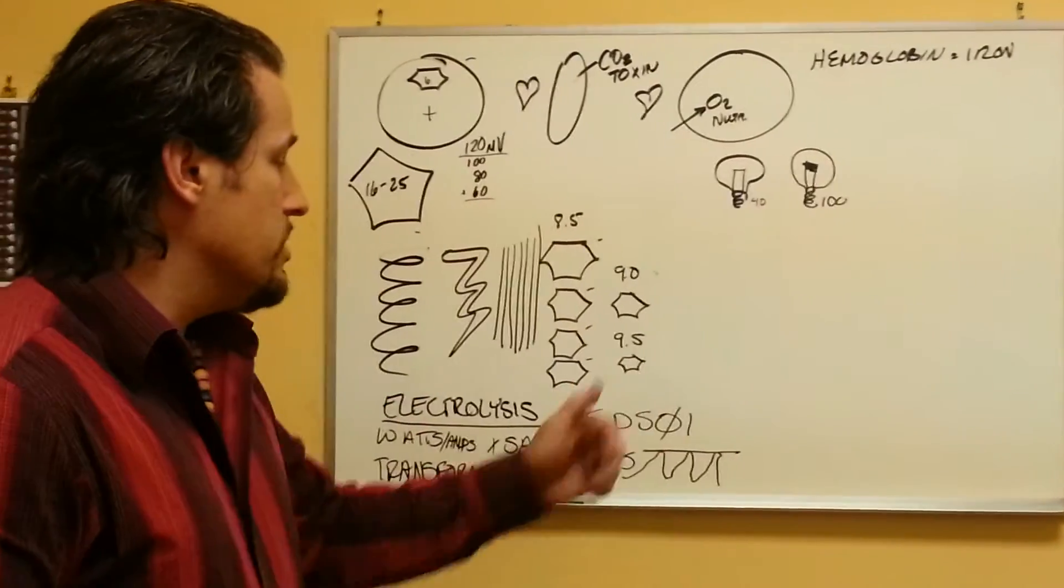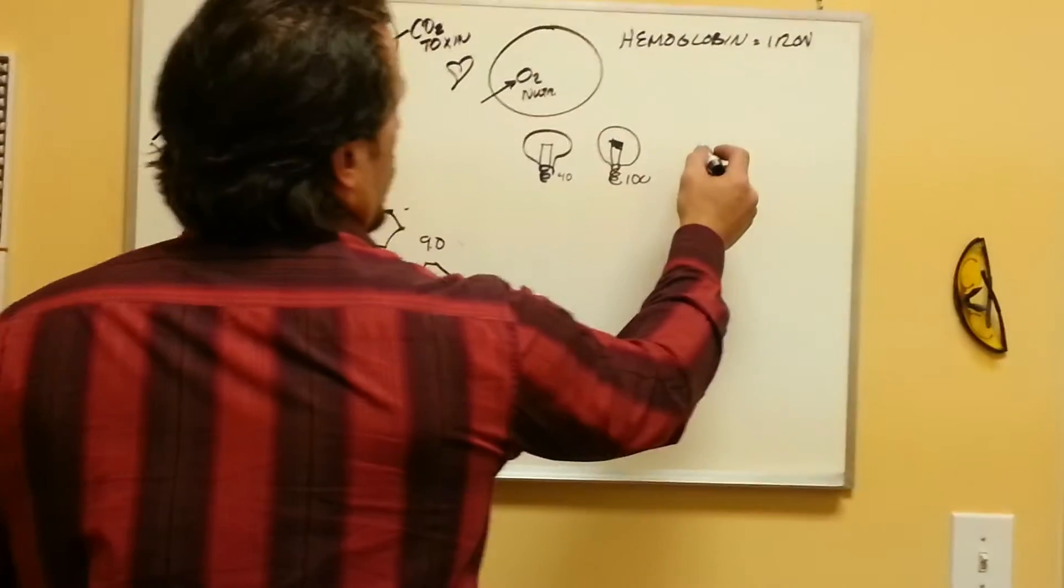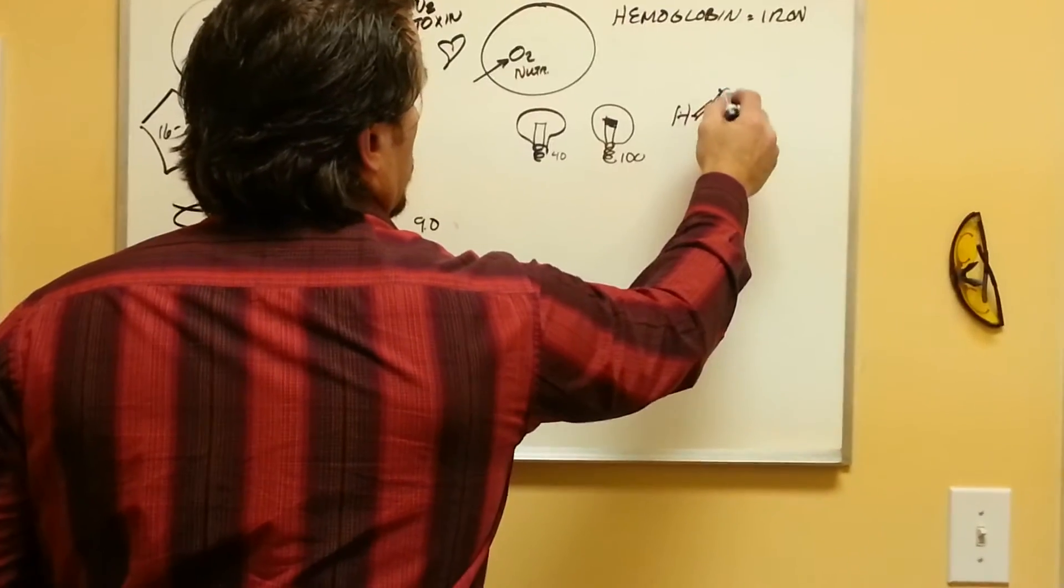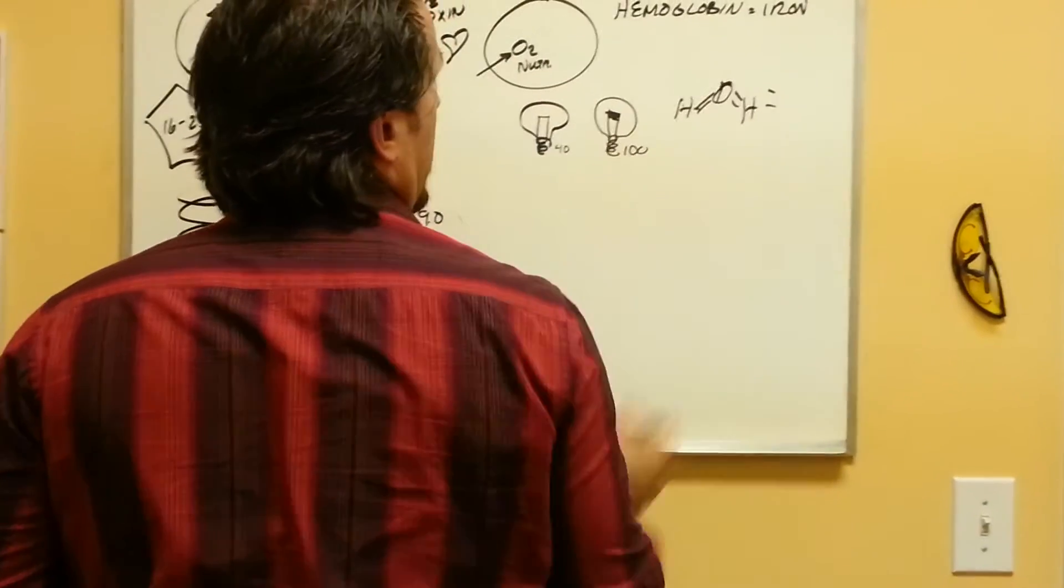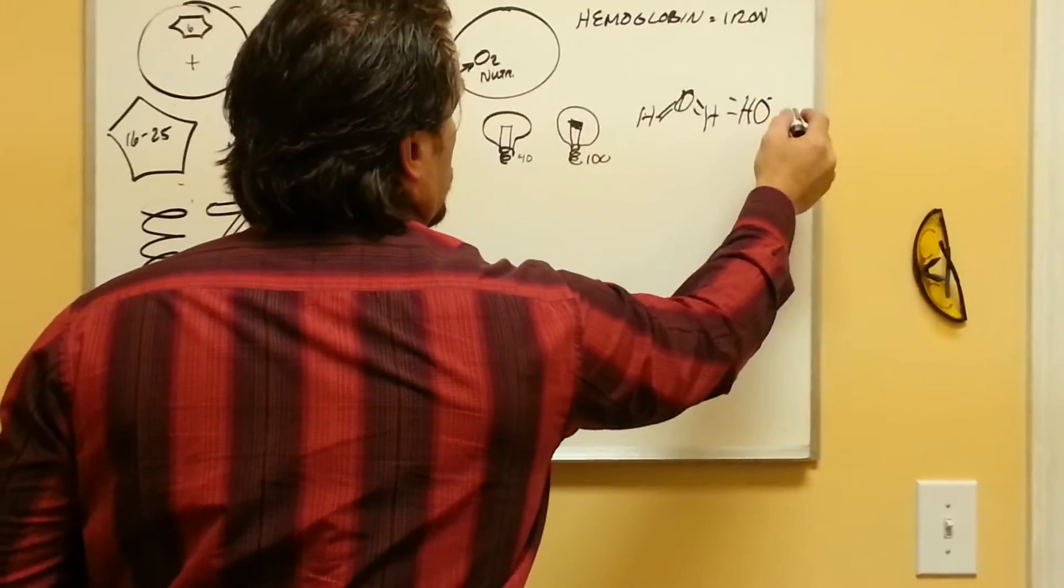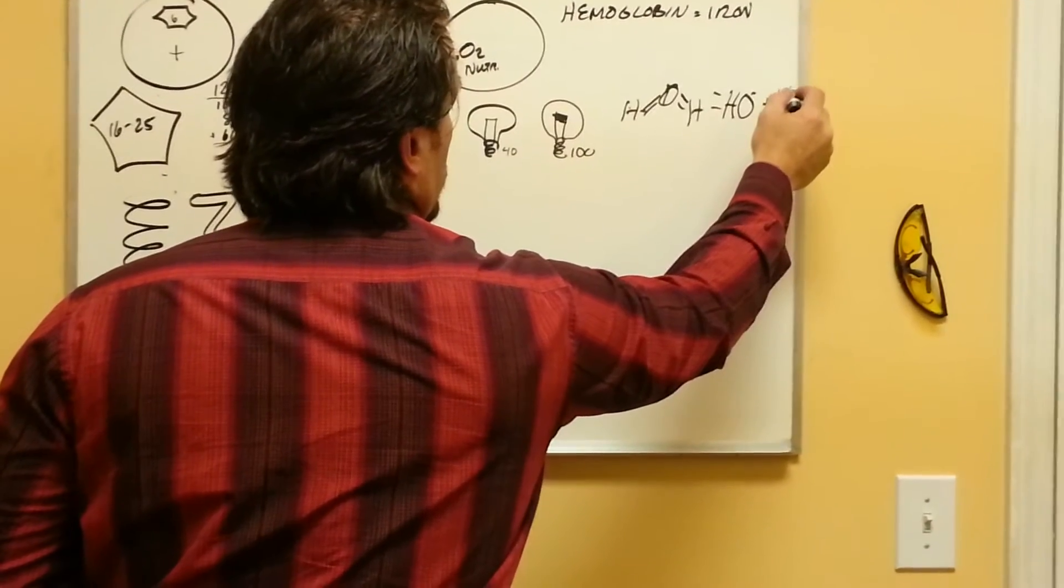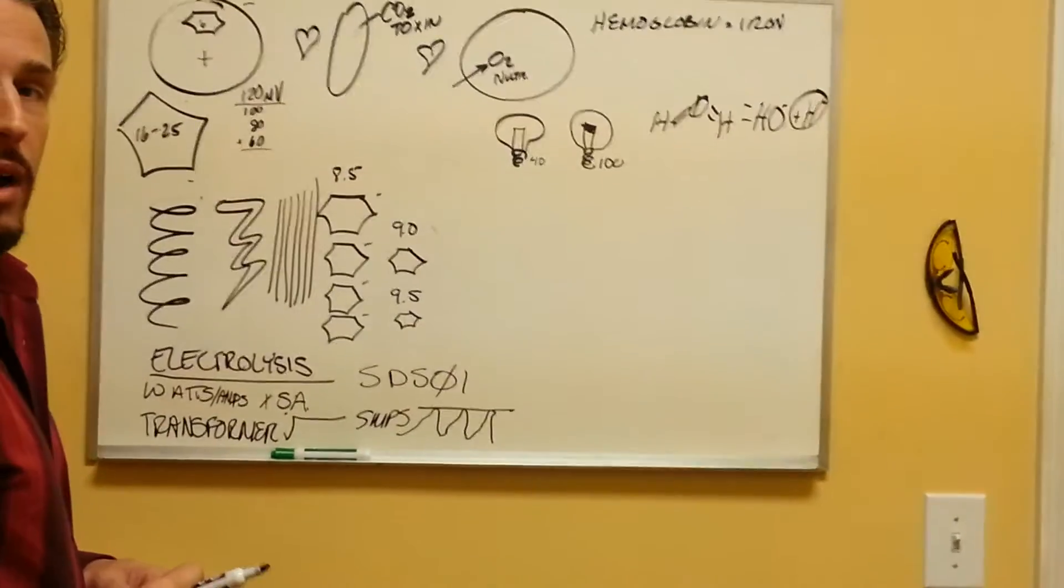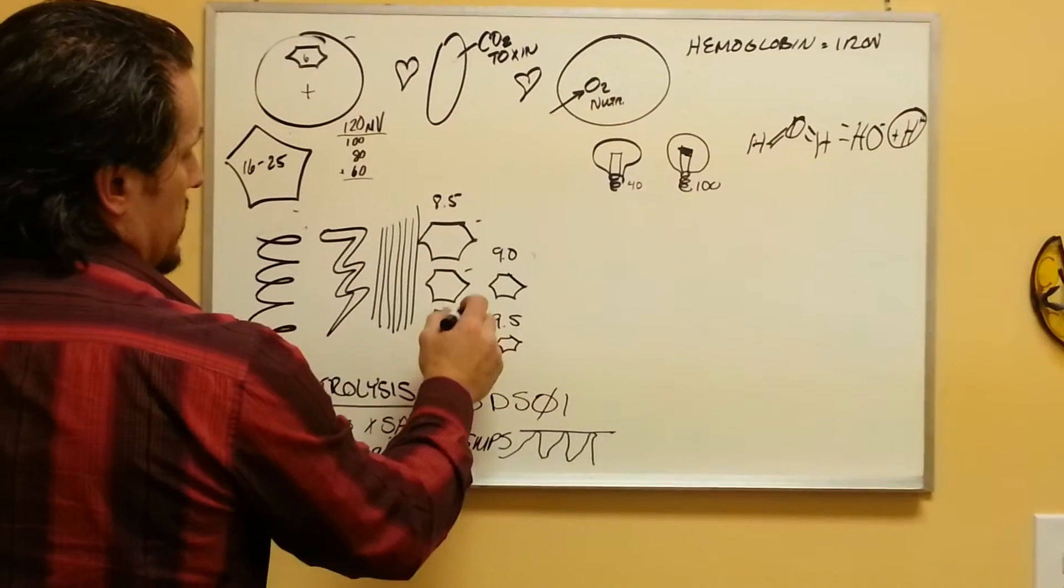Why that's important is because this electrolysis process, when you have enough voltage, will literally take the water molecule, which is diagrammed like that, and it spits it out to be hydroxide and a hydrogen ion. This hydrogen ion right here is the most powerful antioxidant that we know of. That's part of what takes these charges here.